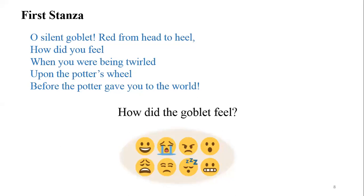According to your thinking, how did the goblet feel? No, he's not happy. He's sad. Why? Because he is in the potter's wheel, being twirled. What do you mean by twirled? It spins very quickly, very fast. Normally when we are moving, we feel dizzy, sometimes giddy. The poet asks the feeling of the goblet — that is why he asks, 'How did you feel?'